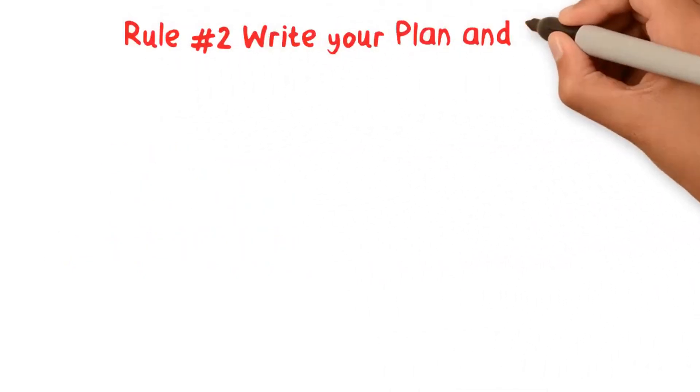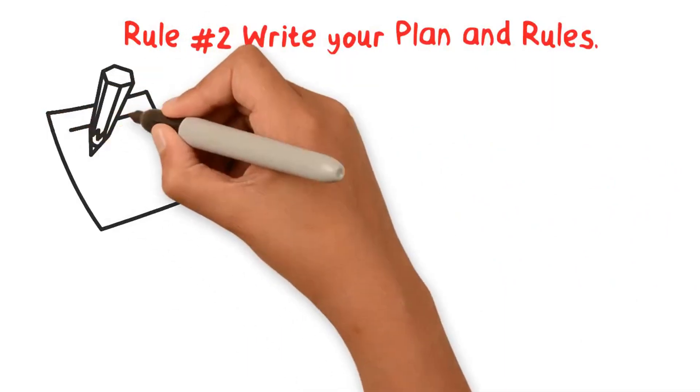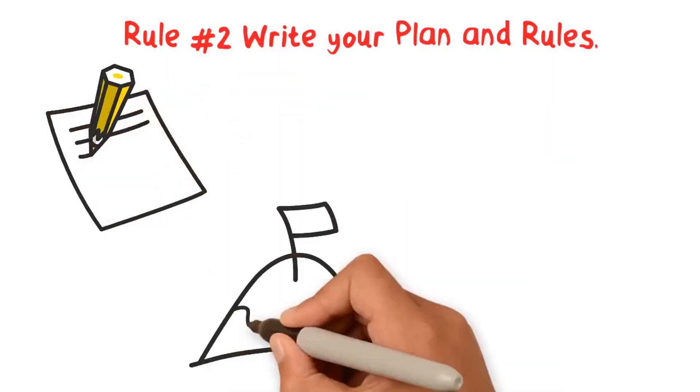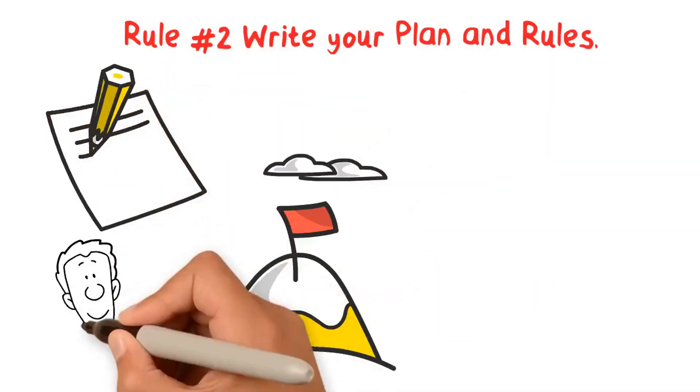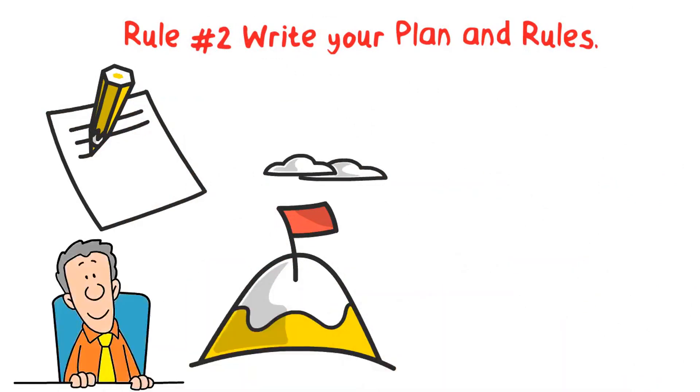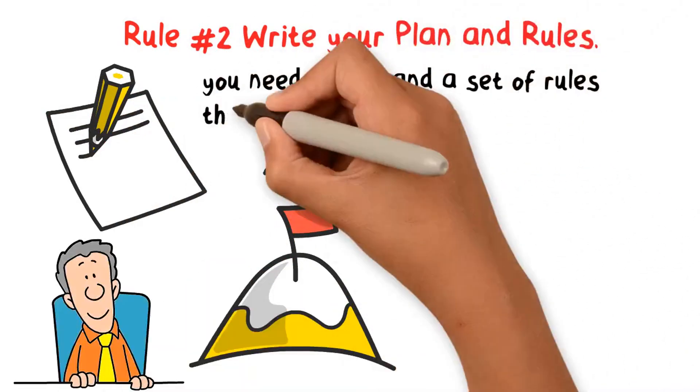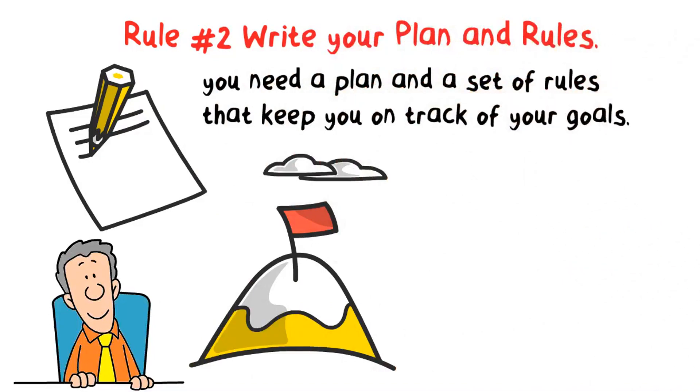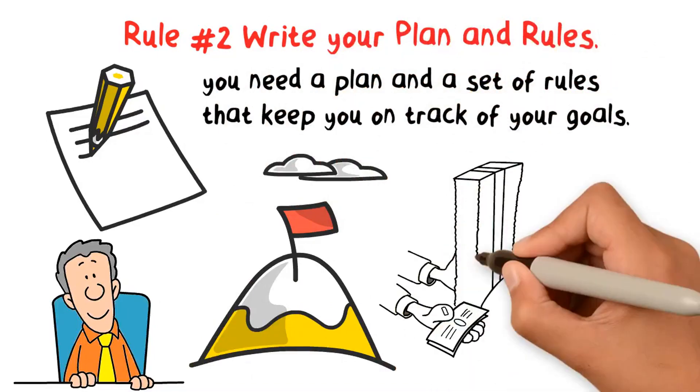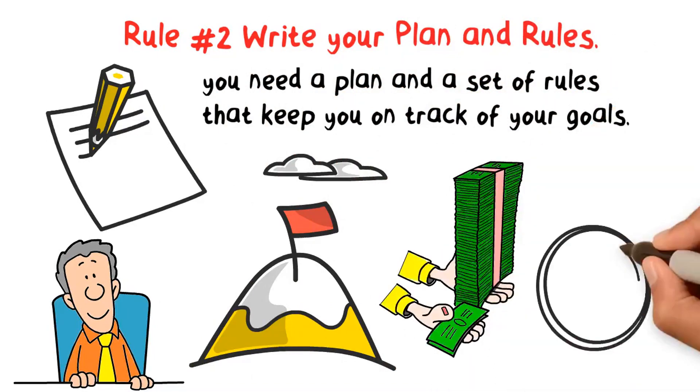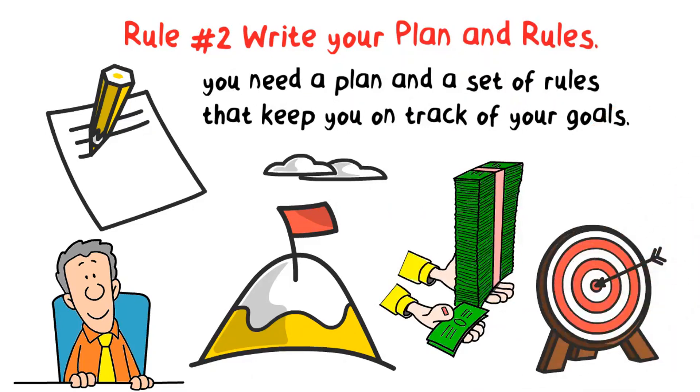Rule number two: write your plan and rules. Making an investment plan is essential to get success in investment. If you want to follow a process and be disciplined in your investment, you need a plan and a set of rules that keep you on track of your goals. An investment plan should assess your current financial situation, define your goals, determine your risk tolerance, decide what to invest in and how to invest. Will you invest based on fundamental analysis, technical analysis, or both?